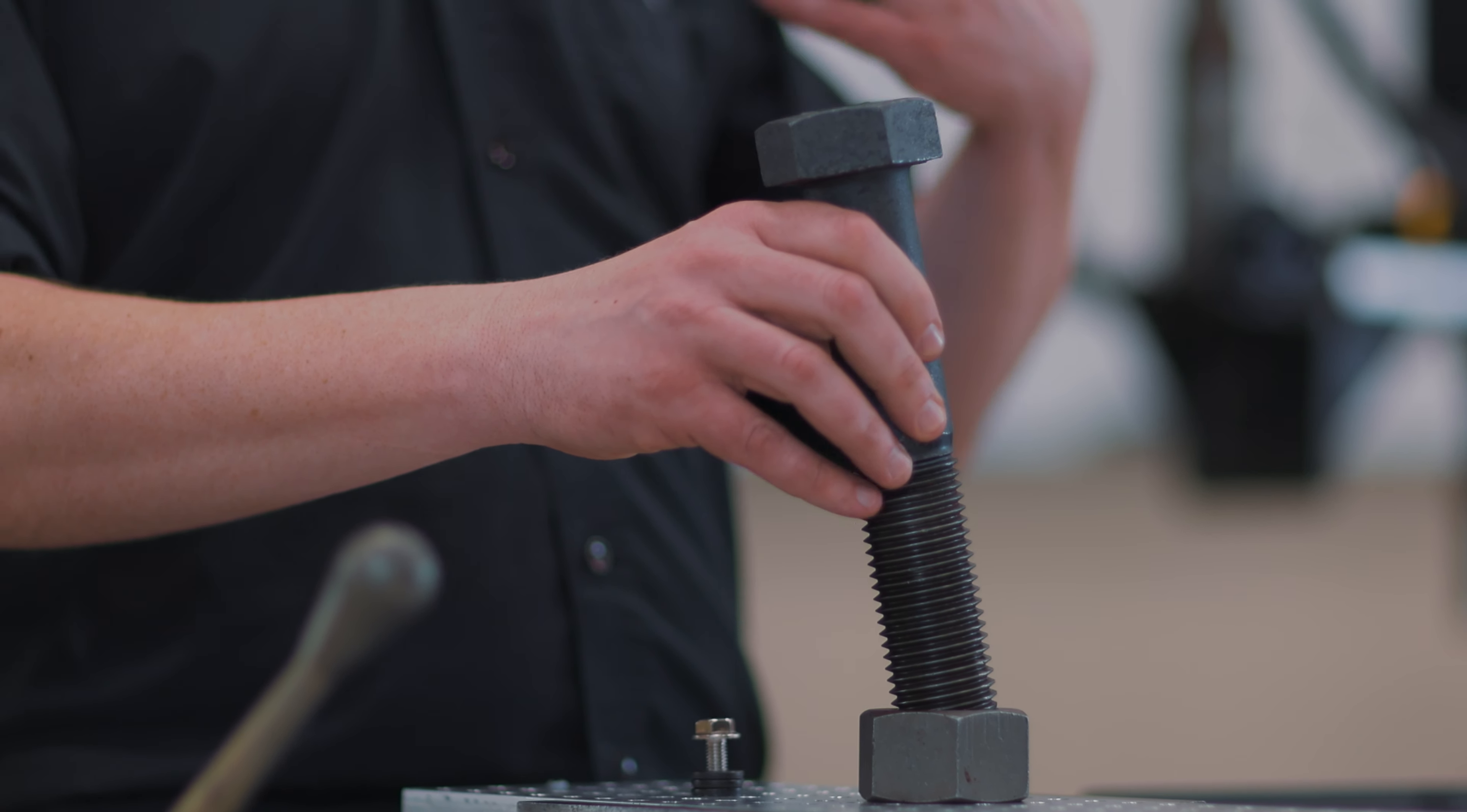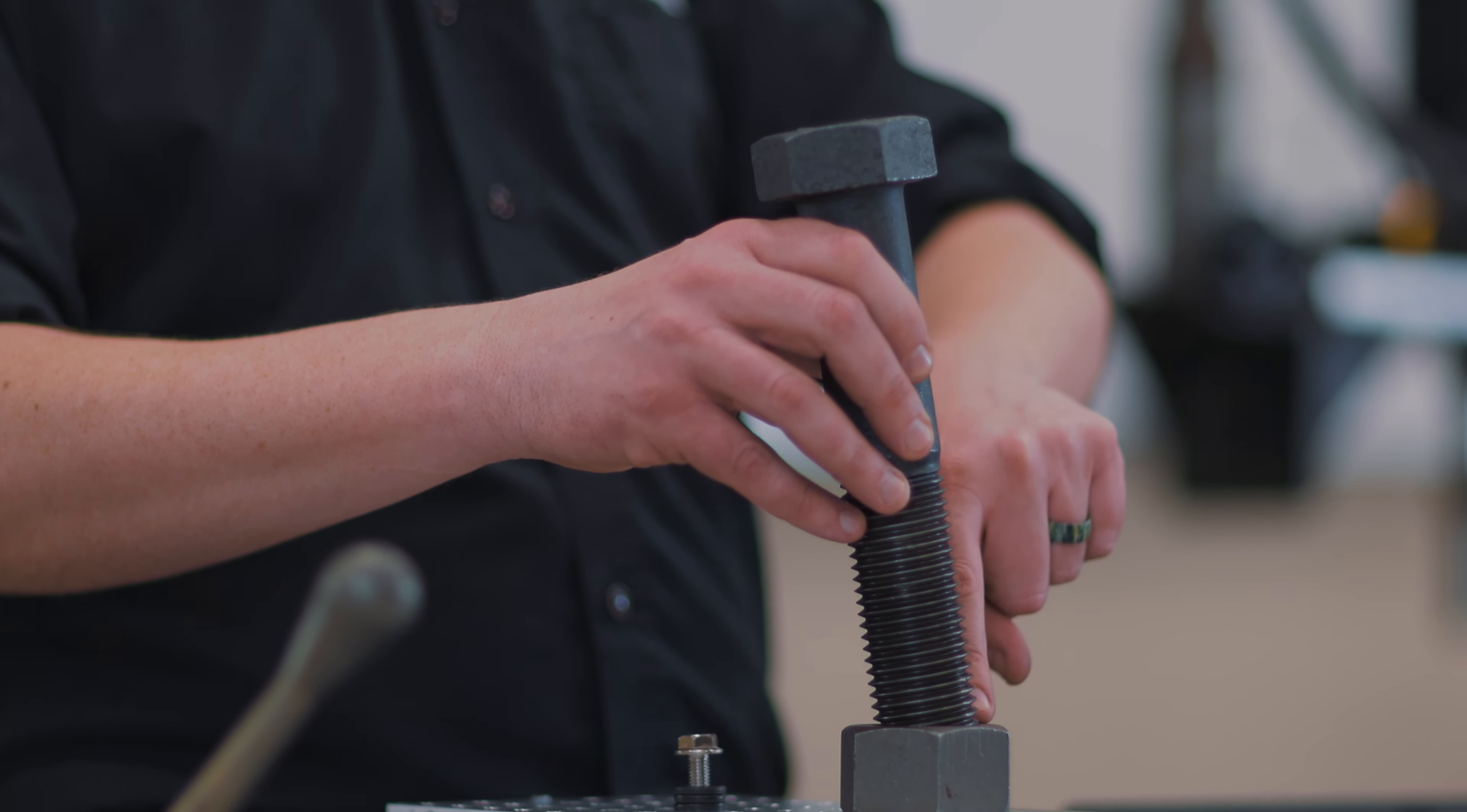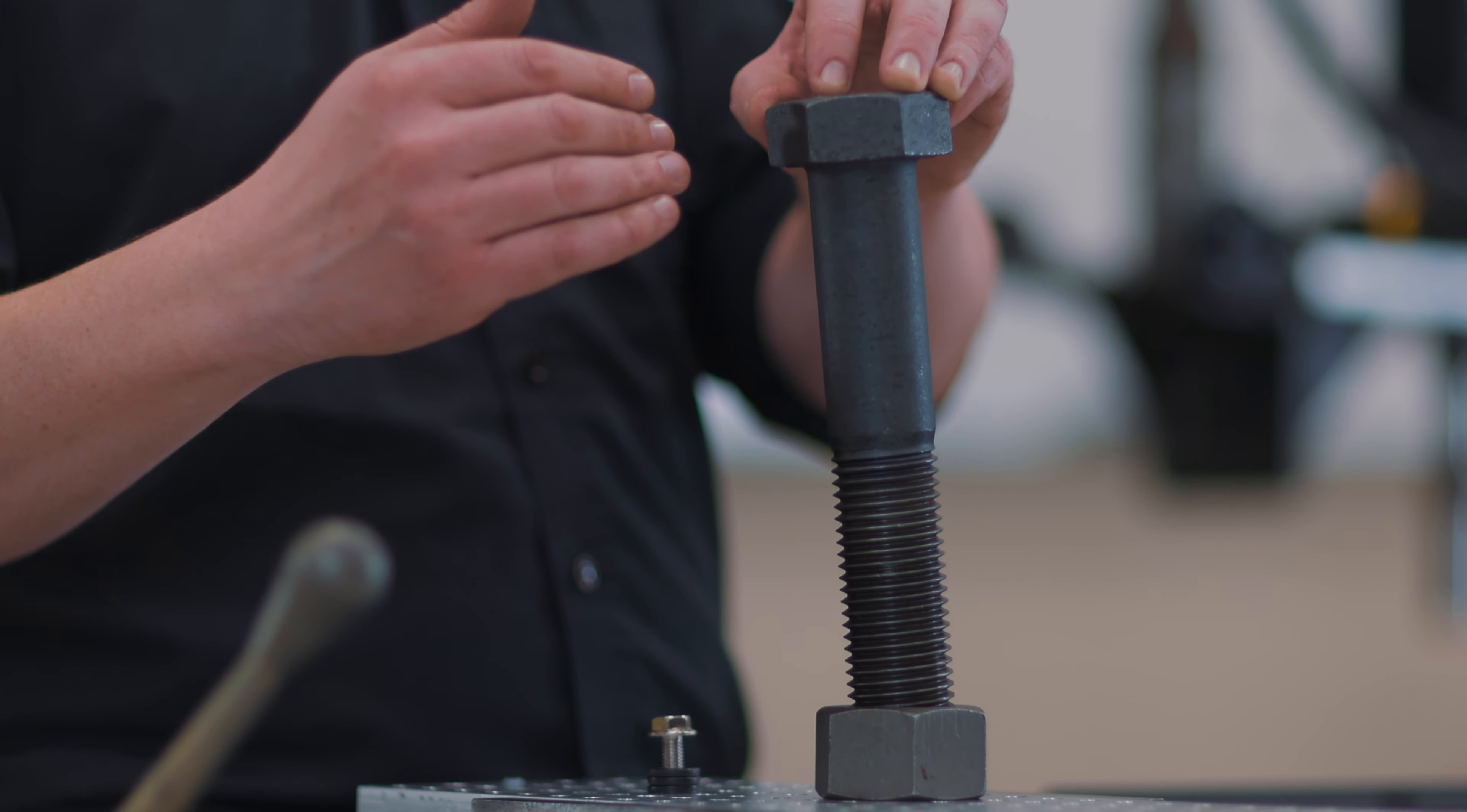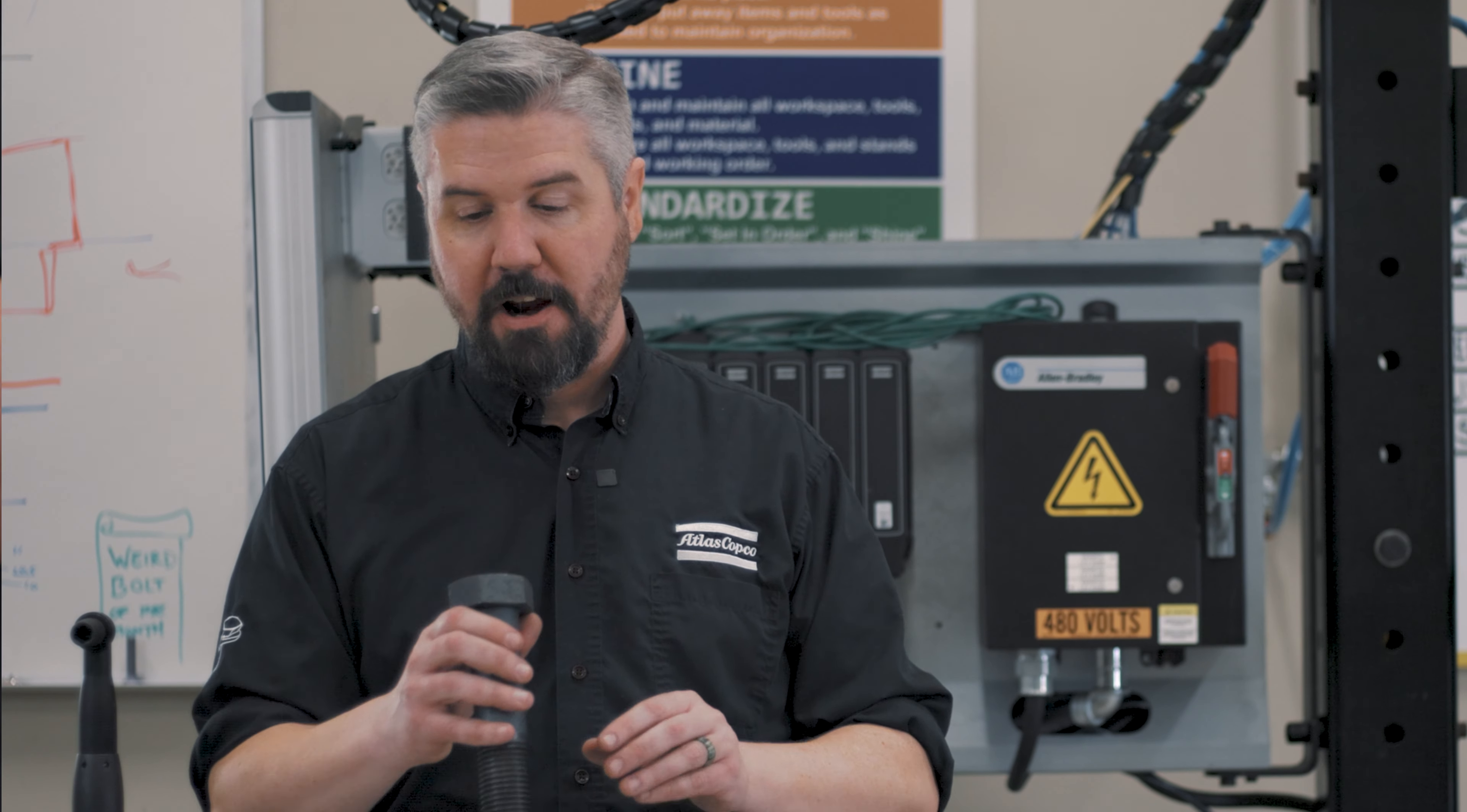But if we start the bolt in a crooked condition like this and try to drive it down, it's like tripping up the first step of a staircase. It's going to grab the wrong thread and not interface the threads correctly. It's going to hit the torque value way before it should and not fully seat the bolt, resulting in an unstable tightening.